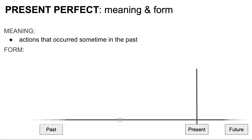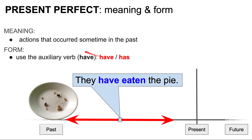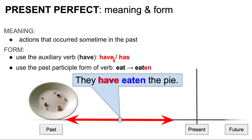The meaning: we use the present perfect for actions that occurred sometime in the unknown past. For example, they have eaten the pie, but we don't know when. The form of the present perfect: we use the auxiliary verb have — that is have or has — and we use the past participle form of a verb. For example, eat, ate, eaten. They have eaten the pie.